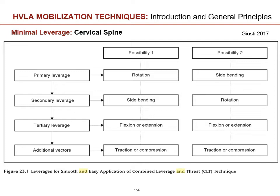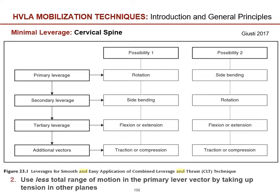Here's a simple schematic to reinforce this concept. You can see two possibilities where either rotation or side bending are your primary levers, with subsequent rows denoting options for secondary, tertiary, and additional levers. Sticking with possibility one — primary rotation, secondary side bend — you can add flexion or extension as a PA shift, add a lateral shift or lateral glide as a tertiary lever, and use slight traction or compression to the cervical spine at the target segment. This further reduces the amount of rotation needed and improves overall comfort, creating minimal leveraging positioning versus barrier positioning.